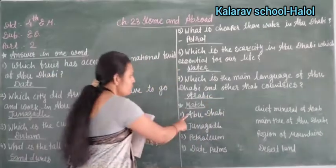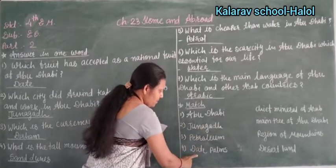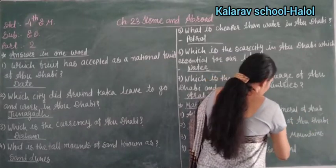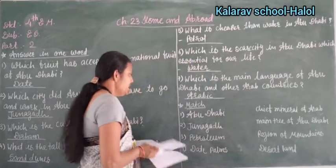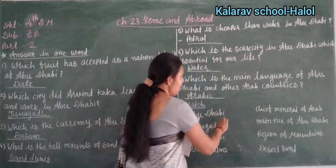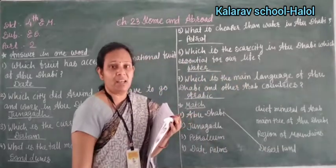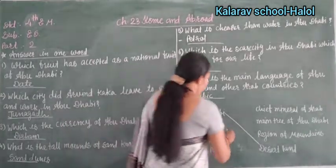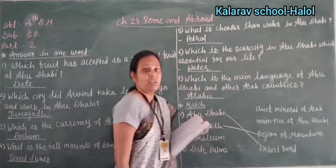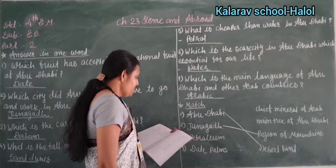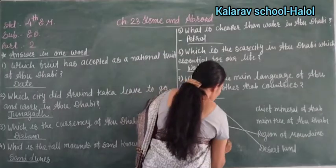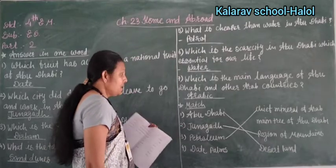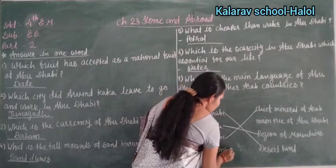Now this is the match exercise. Abu Dhabi matches with desert land — Abu Dhabi is a desert land where everywhere you see desert. Junagadh matches with mountain and desert. Petroleum matches with the cheap mineral of Arab — petroleum is available very cheaply in Abu Dhabi. And date plant is the main tree of Abu Dhabi.